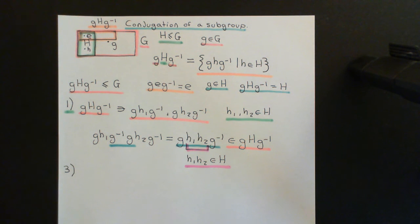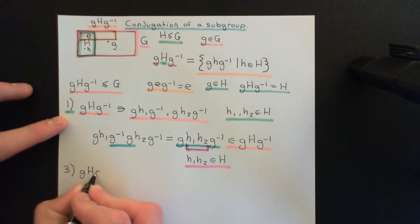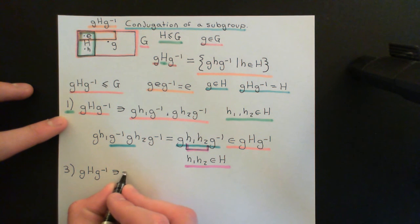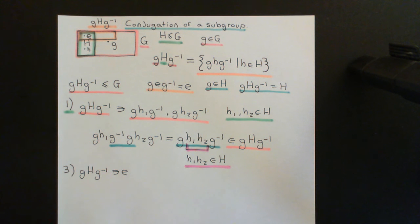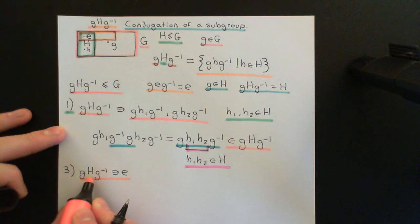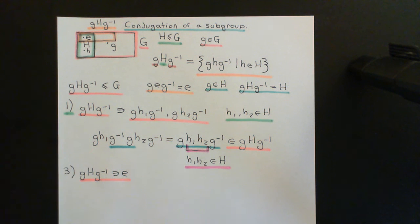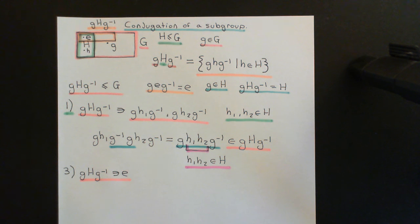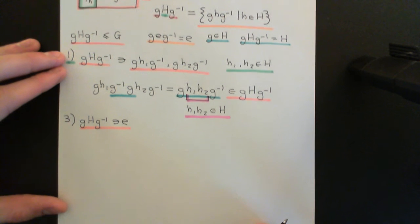Axiom three says the subgroup must contain the identity element, but we've already proven that. The conjugate of the subgroup capital H under the element little g always contains the identity, because when we go through all elements of capital H and conjugate them by little g, one of those elements is the identity, which is always in the subgroup. When we conjugate the identity by anything, we just get the identity. So the identity will always be in the conjugate of the subgroup capital H under little g.